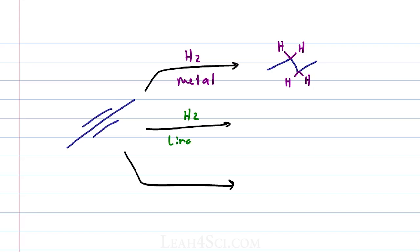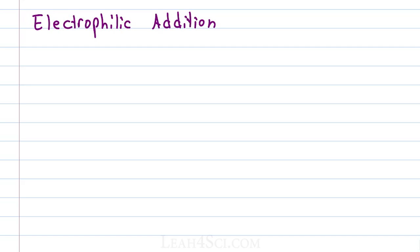Using H2 and a Lindlar's catalyst will get a cis alkene. Using sodium or lithium in liquid ammonia for dissolving metal reduction will get a trans alkene. And of course we can use the alkyne as a jump off point for adding functional groups to the molecules.